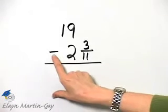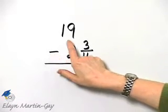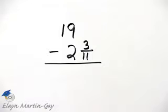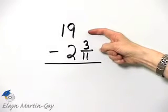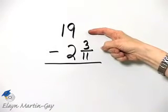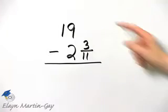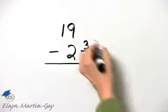Let's perform this indicated operation. I've got the whole number 19 minus the mixed number 2 and 3 elevenths. Unfortunately, I have no fraction part here for which to subtract 3 elevenths from, so I will borrow.